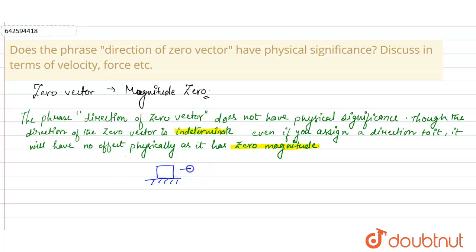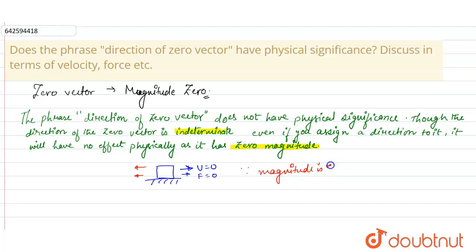Now let us suppose if you give a body a velocity of zero magnitude and a force of zero magnitude in whatever direction — in this direction or any direction — since the magnitude is zero, it will have no physical effect on the body. The state of the body will remain the same and will not change.